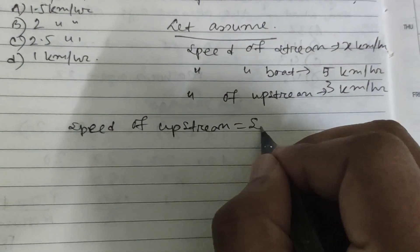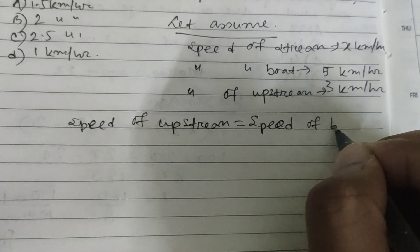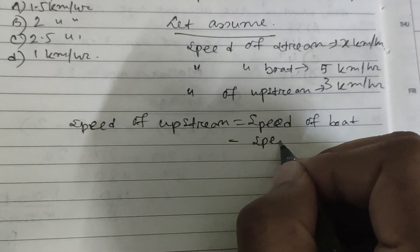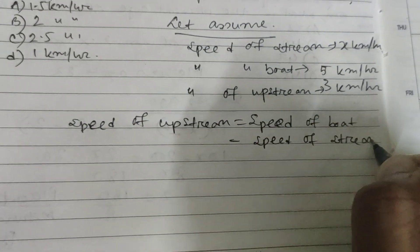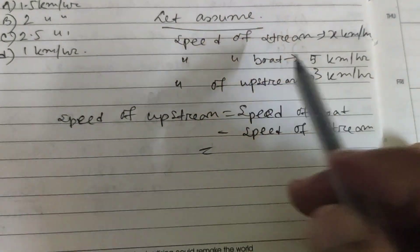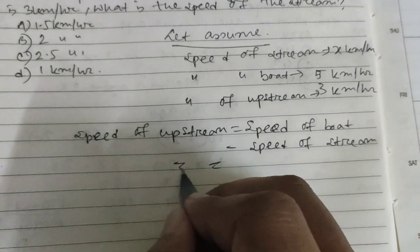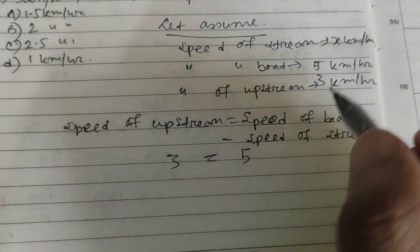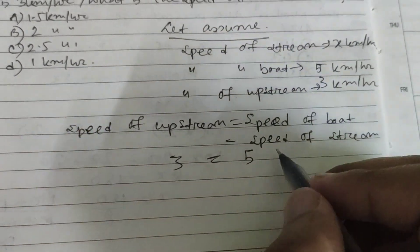Speed of upstream is speed of boat minus speed of stream. What is the speed of boat? It's 5. And what is the upstream? It's 3. The boat speed is 5, and we assumed that the speed of the stream is x, so 5 minus x equals 3.